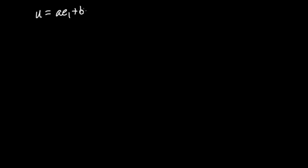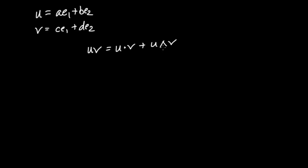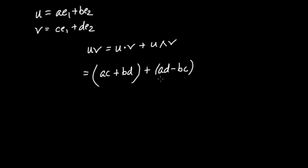Let me write out the geometric product in full generality. With U = A·E1 + B·E2 and V = C·E1 + D·E2, the geometric product UV equals the dot product plus the wedge product. The dot product gives the grade-zero scalar AC + BD, and the wedge product gives the grade-two bivector (AD − BC)·(E1∧E2).